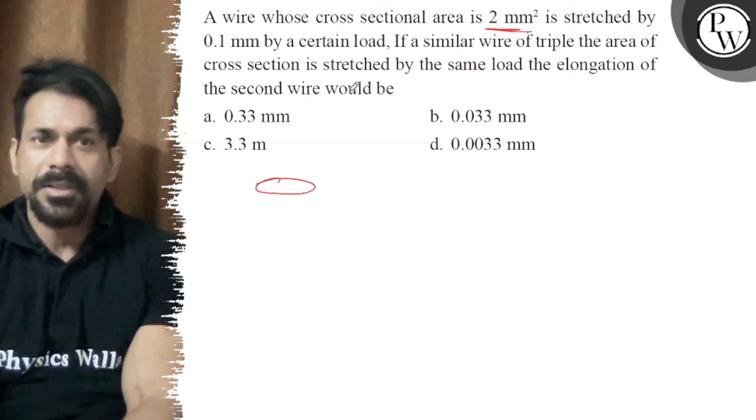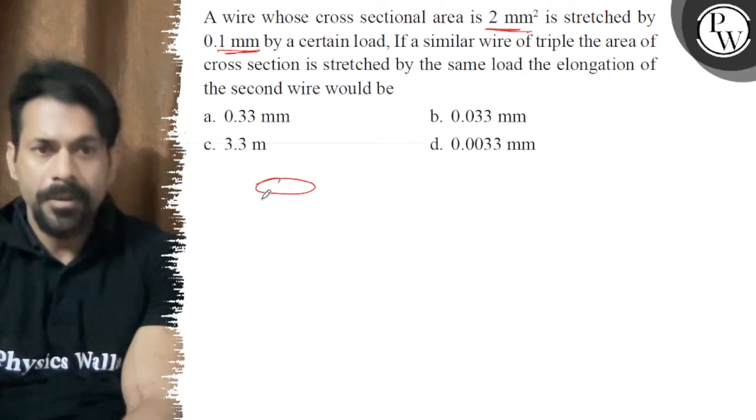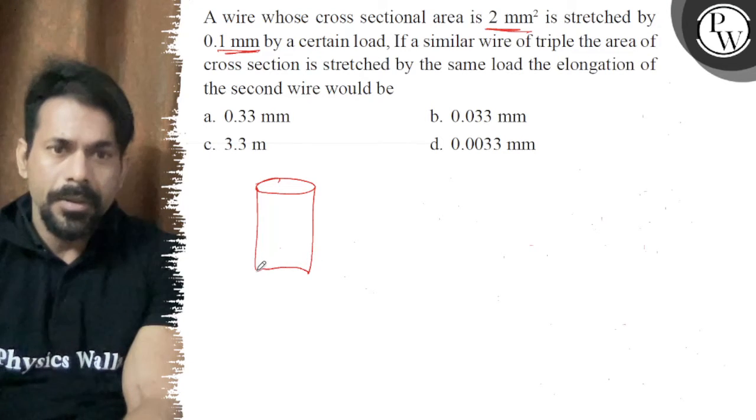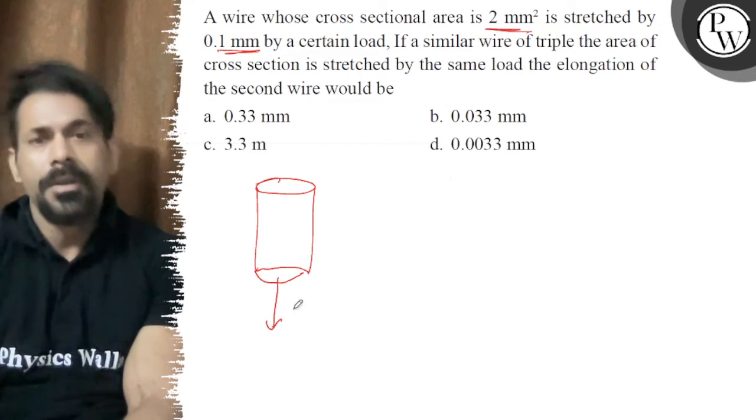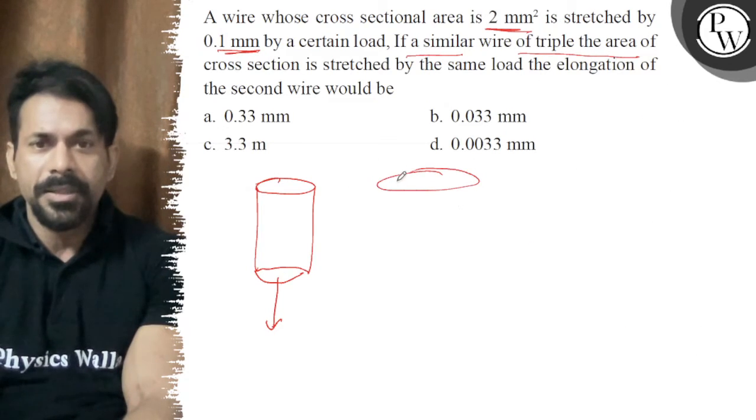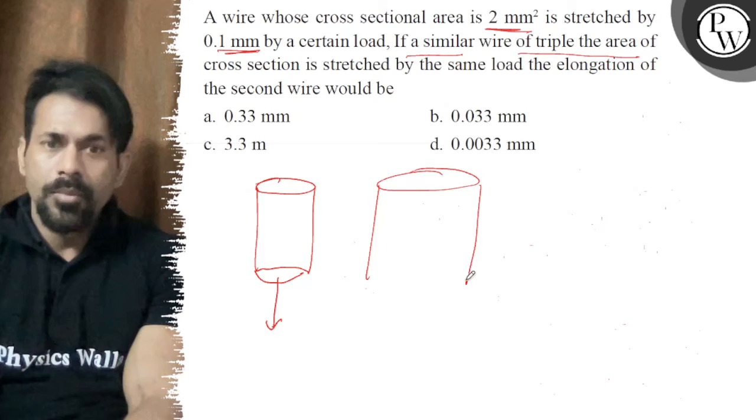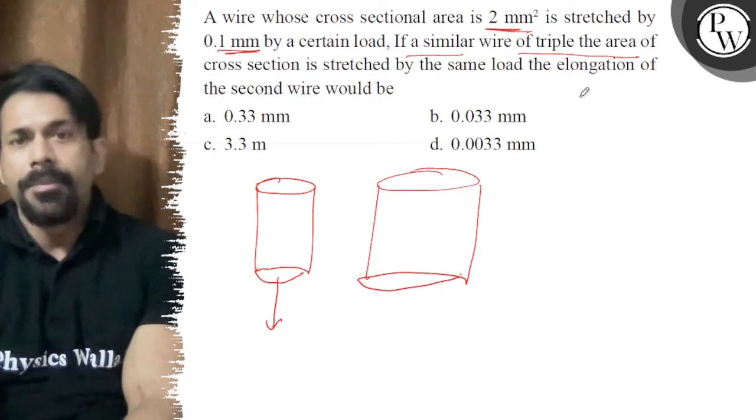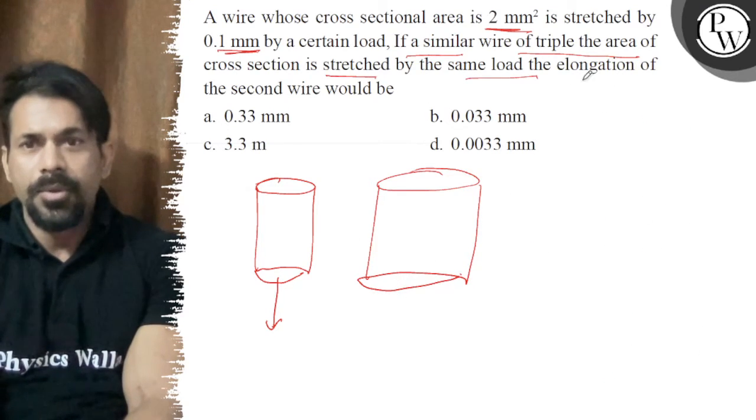If a similar wire of triple the area of cross-section, area is 2 mm² stressed by 0.1 mm by a certain load. If a similar wire is tripled the area of cross-section is tripled by the same load, elongation of the second wire...